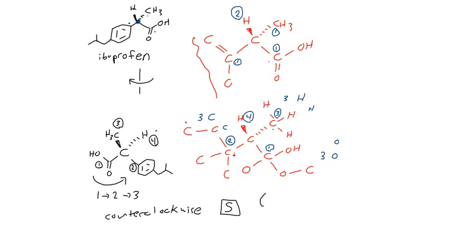Now we look at substituents 1, 2, and 3 and see whether they are arranged clockwise or counterclockwise. We find that it is indeed counterclockwise, so this stereocenter is S. So we have S-ibuprofen. Interestingly, the S enantiomer of ibuprofen is actually the active enantiomer — it's the compound that does the pain killing. The R enantiomer is actually inactive physiologically, so it would not do anything in your body. That's an interesting application of chirality and absolute configuration in compounds with stereocenters.